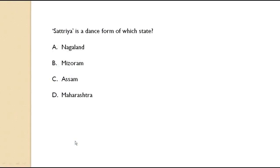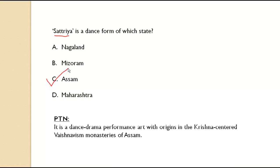Sattriya is the dance form of which state? It is of Assam. Sattriya is a dance-drama performance art whose origins are in the Krishna-centered Vaishnavism monasteries of Assam. So remember it is about Krishna-centered Vaishnavism, and it belongs to Assam.